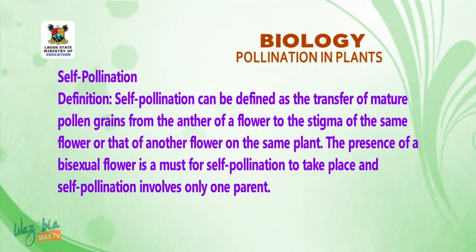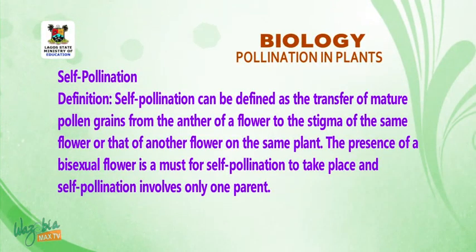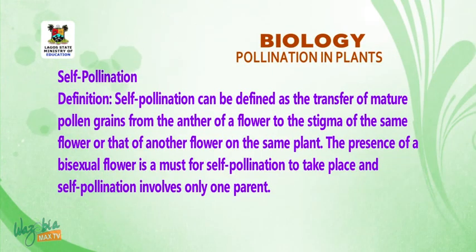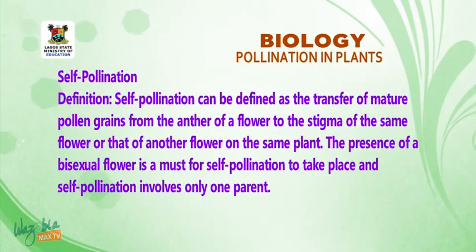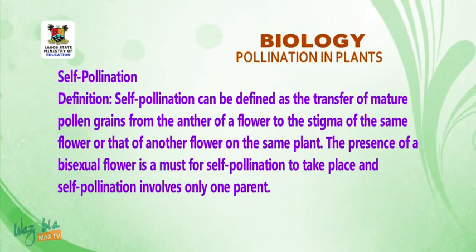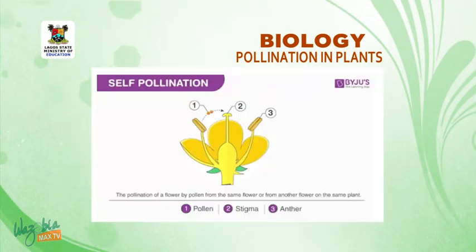Self-pollination can be defined as the transfer of mature pollen grains from the anther of a flower to the stigma of the same flower, or that of another flower on the same plant. The presence of a bisexual flower is a must for self-pollination to take place, and self-pollination involves only one parent. Look at the picture for self-pollination.